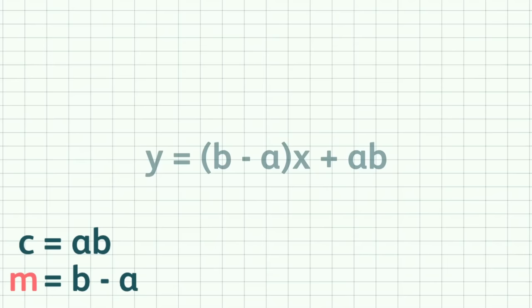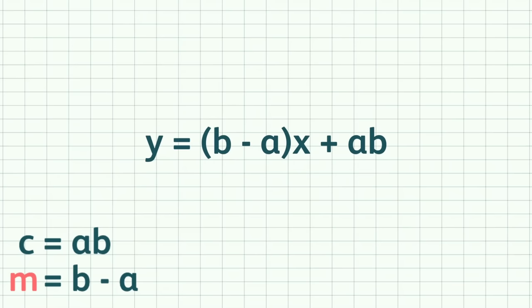So, c is ab. Thus, the equation for our line is y equals b minus a times x plus ab.